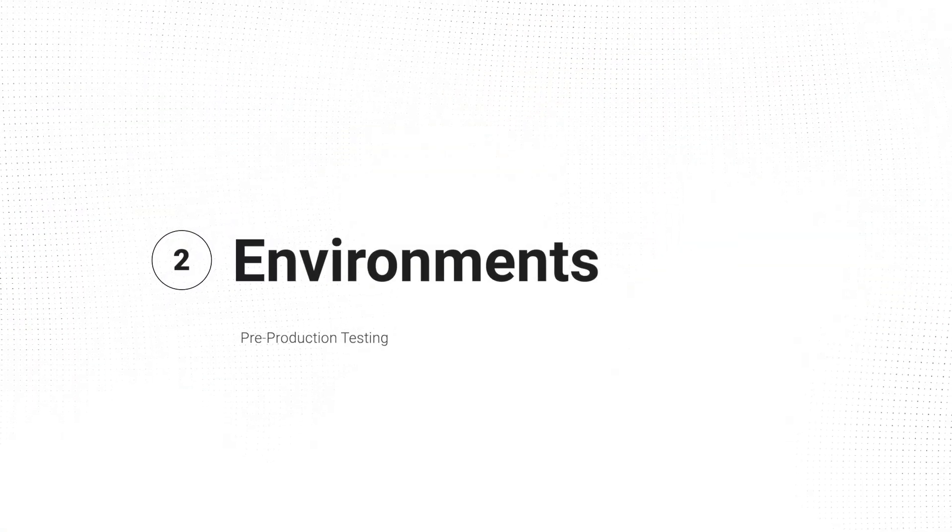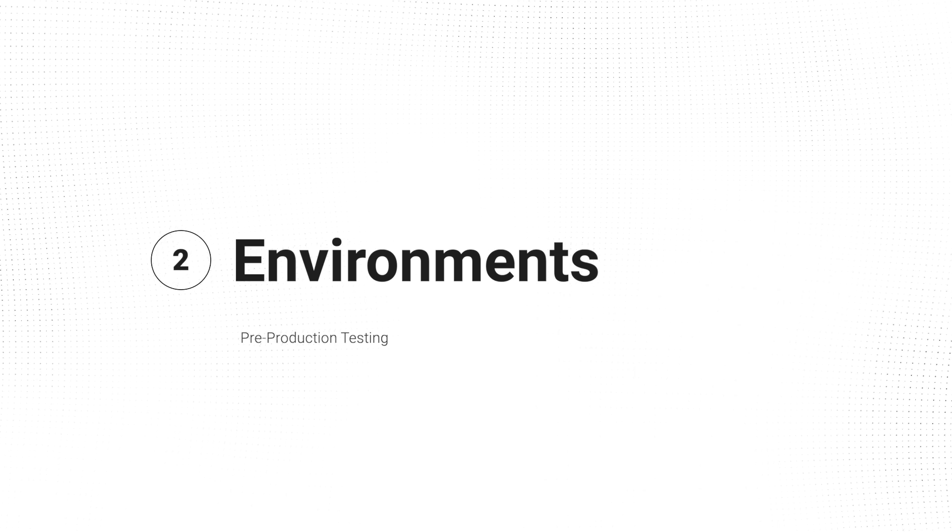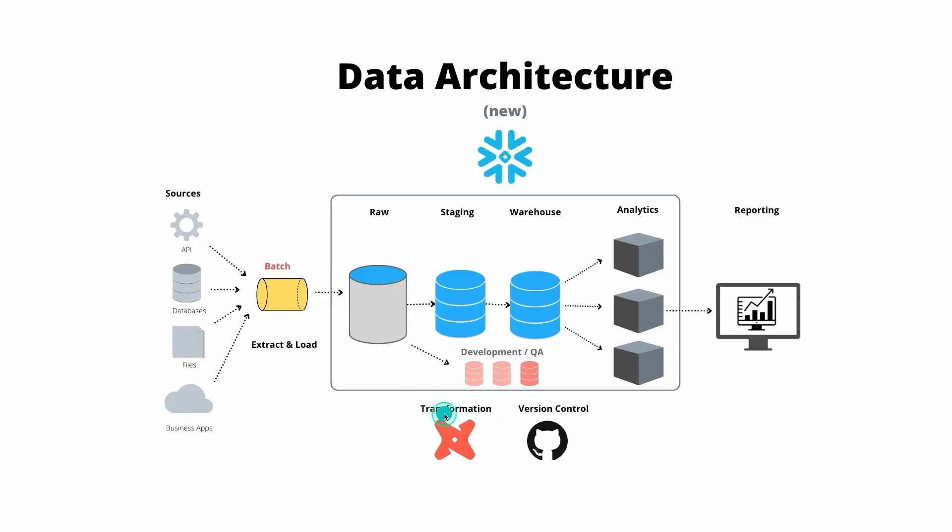Number two is environments and isolating where you're developing. A lot of times what I notice with teams when they're first getting started, or even a little further along, is they only have a production environment and everything else is loosely considered development, but there's no real process. But if you're particular about establishing different environments — for example, a development environment as well as a CI or UAT pre-production testing environment — it can really help establish a process and give you different spots to catch errors before they get to production.